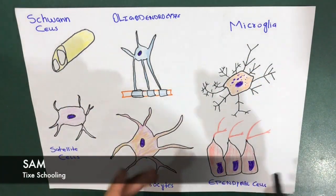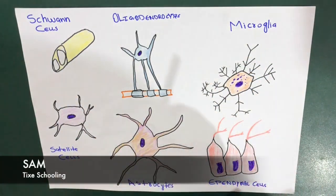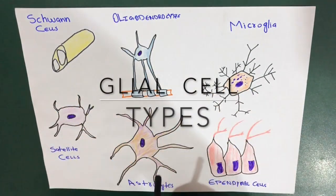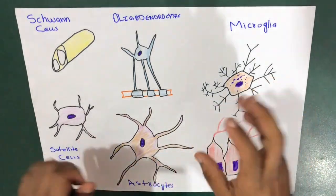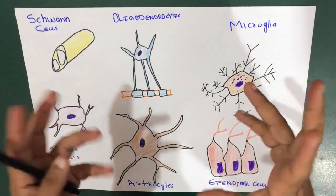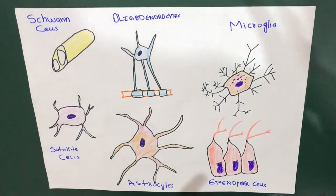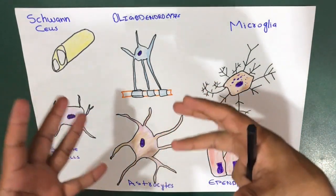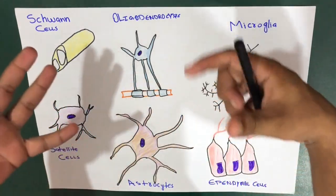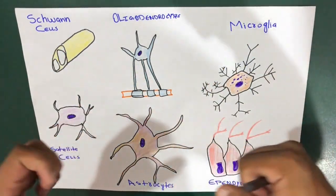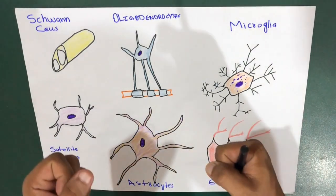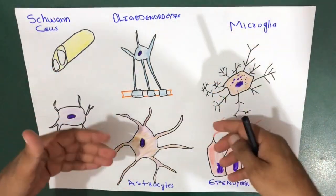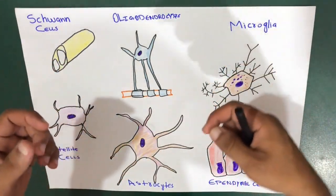Hello YouTube, this is Sam from Tiger Schooling, and in this session today we are going to talk about the glial cells, also called the neuroglial cells, or you can call them the nerve glue. The glial cells are actually the supportive cells in the central nervous system, which means they are related to your brain, spinal cord, and every nerve involved in your body. They provide protection, food, and a lot of other things.